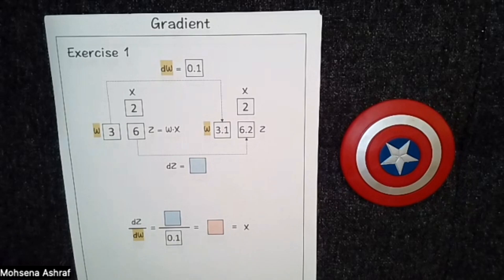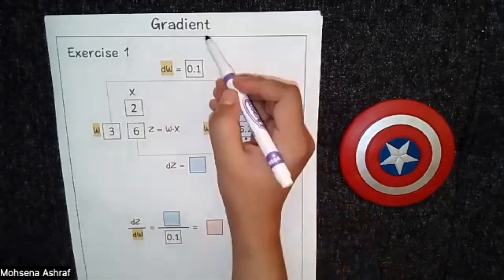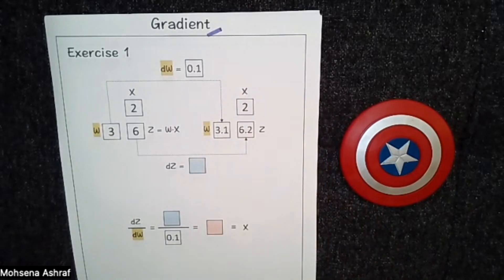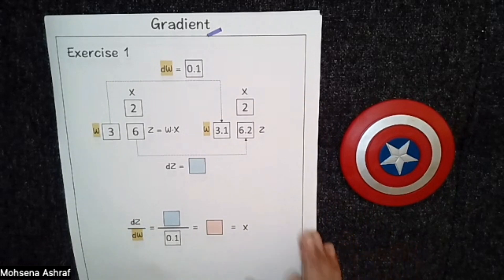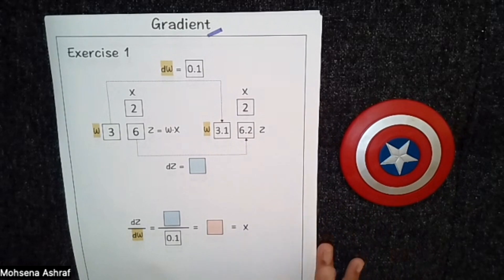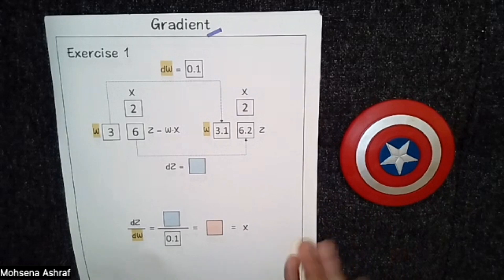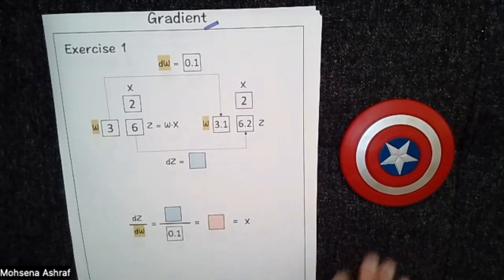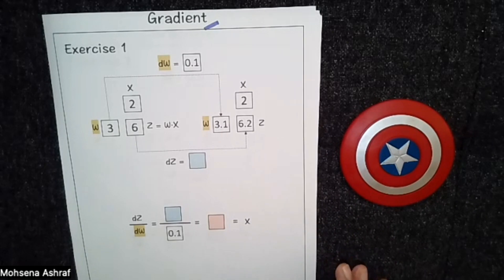Hello everyone. This video is about gradient. The term gradient generally refers to the rate of change or slope of a function with respect to its variables. In the context of neural networks, the gradient is used to measure how much the loss function changes with respect to changes in the model's parameters, for instance, weights and biases. But in general, gradient refers to any gradual change or transition.